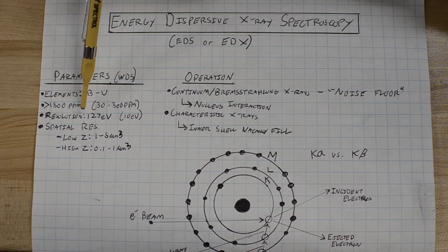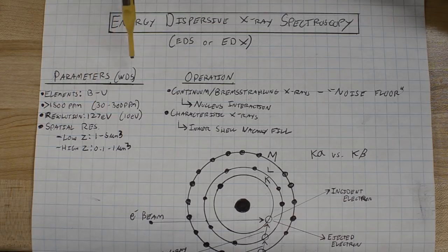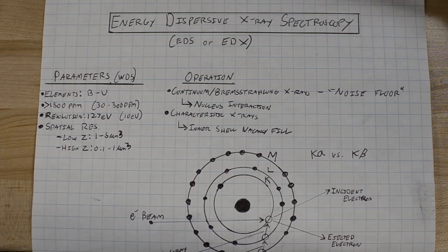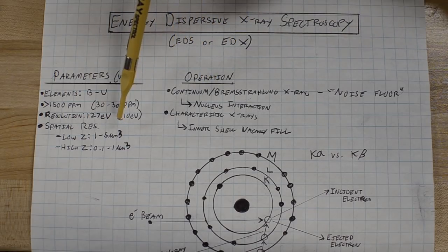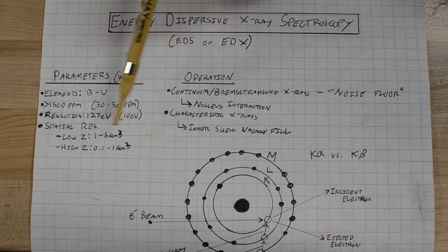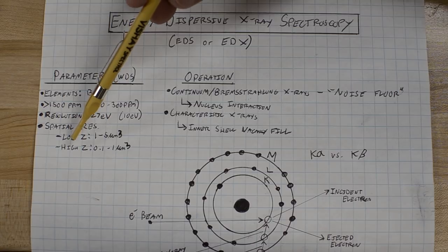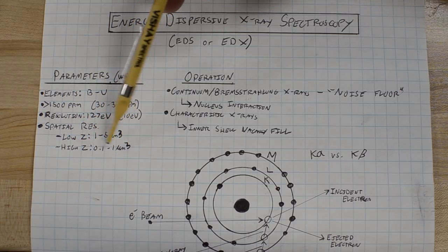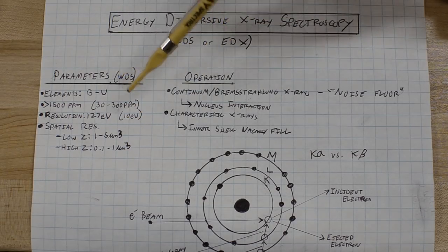The resolution of the system I have here because it's a silicon drift detector and not an old silicon lithium detector is 127 electron volts and that's quite good. The spatial resolution is the amount of the sample that's actually excited when the incident beam hits the sample. For low atomic number samples that's between 1 to 5 cubic microns and for high atomic number samples that can be considerably smaller.